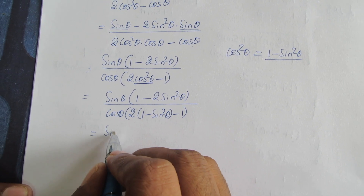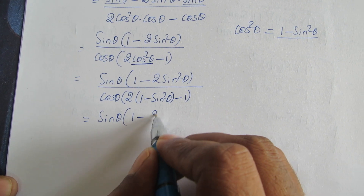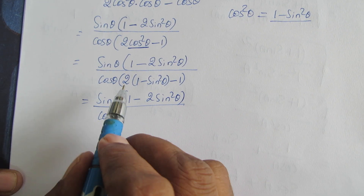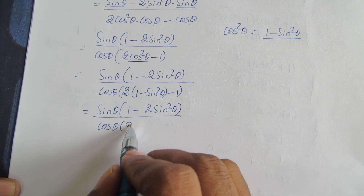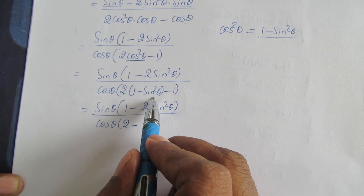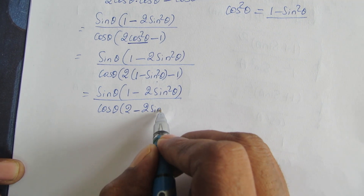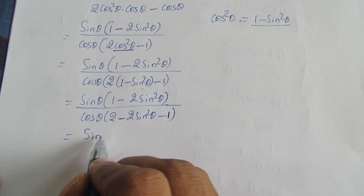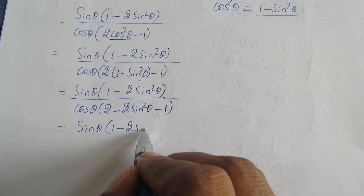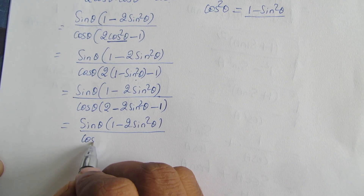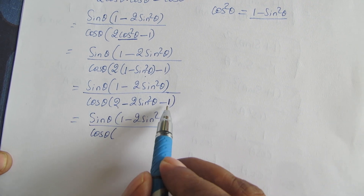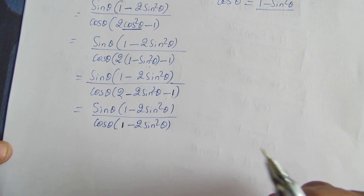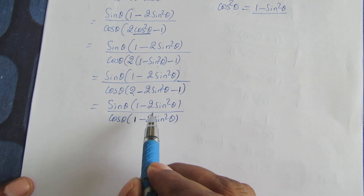So sin theta into 1 minus 2 sin square theta, divided by cos theta. Multiplying out: 2 into 1 is 2, minus 2 sin square theta, minus 1 gives 1 minus 2 sin square theta. So we have sin theta into (1 minus 2 sin square theta) divided by cos theta into (1 minus 2 sin square theta).